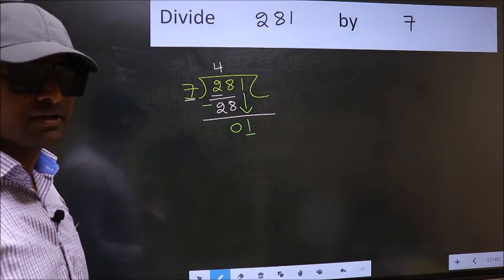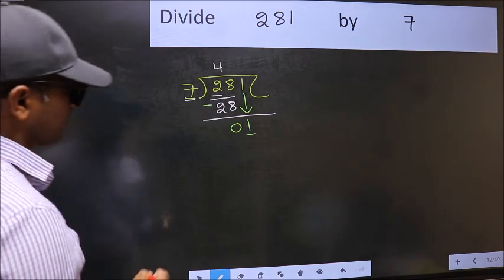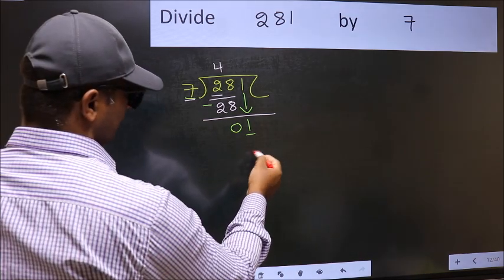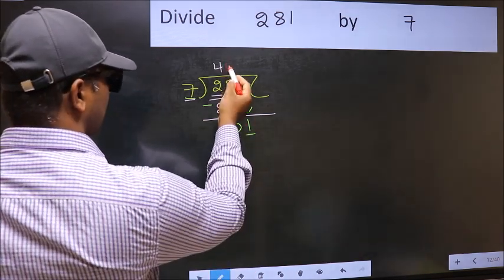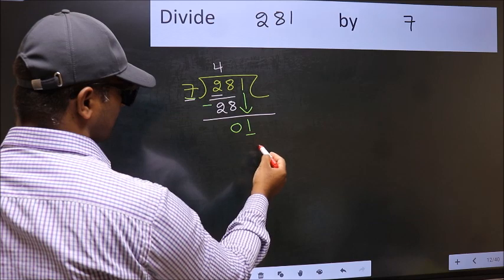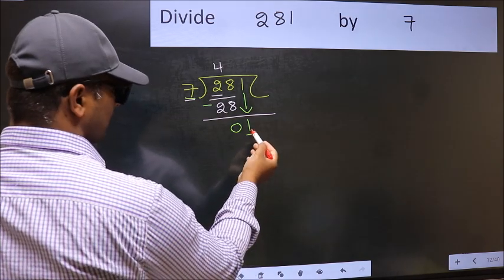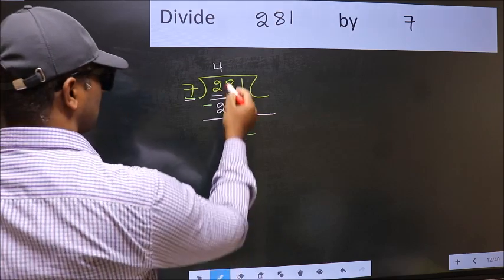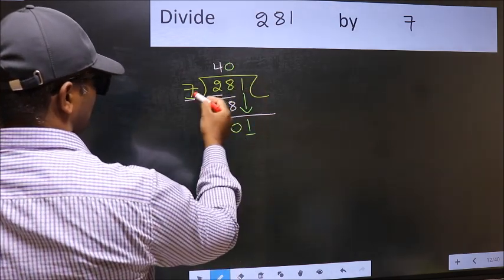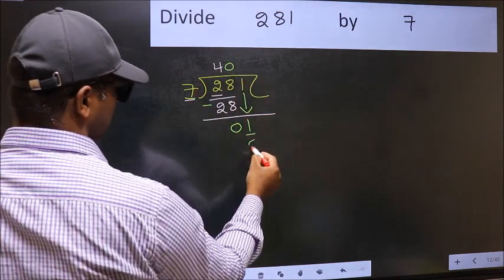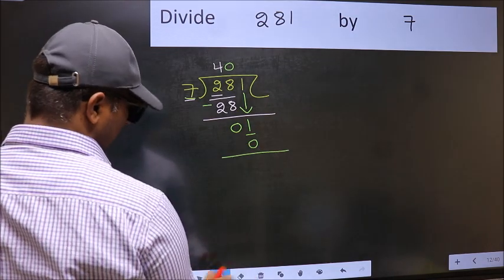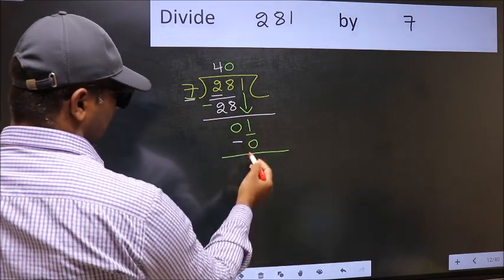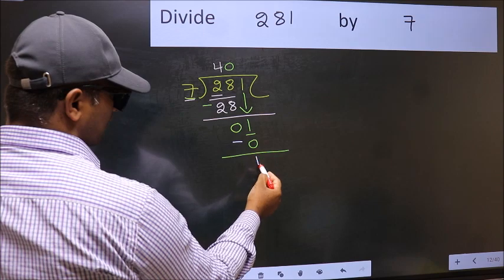Instead, what you should think of doing is, what number should we write here? If I take 1, we will get 7. But 7 is larger than 1. So what we should do is, we should take 0. So 7 into 0, 0. Now you should subtract. 1 minus 0, 1.